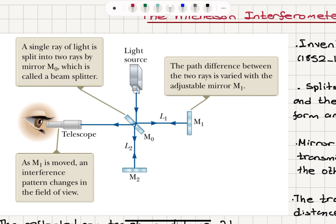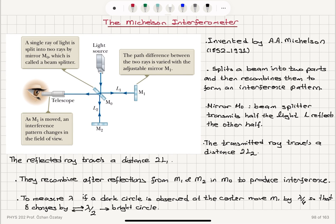So as M1 is moved, an interference pattern changes in the field of view. So we're looking at the interference of the reflected rays coming from M1 and M2 at the point where we are watching with the telescope. This splits a beam into two parts and then recombines them to form an interference pattern on the mirror M0.